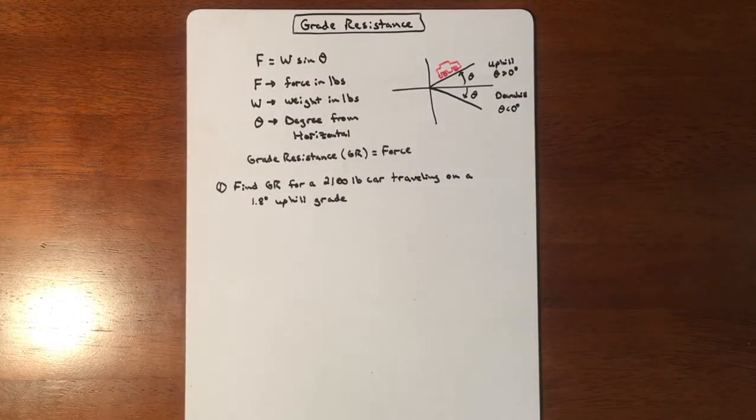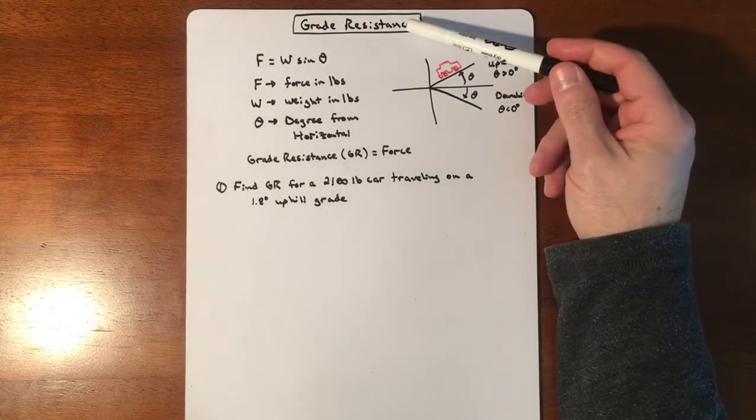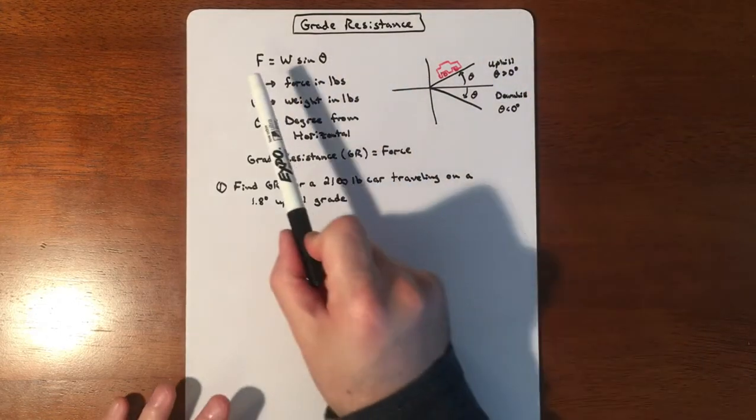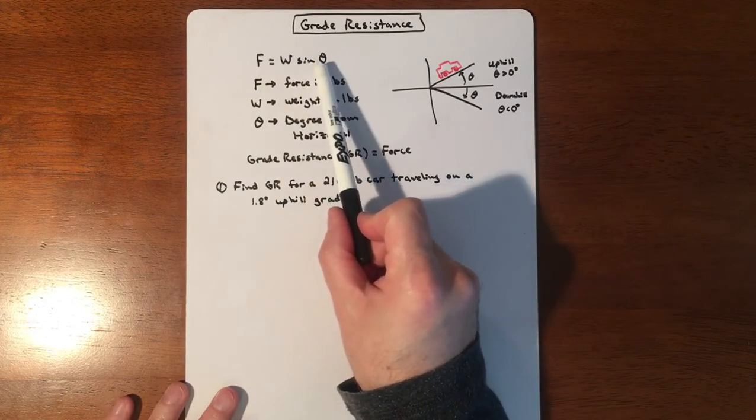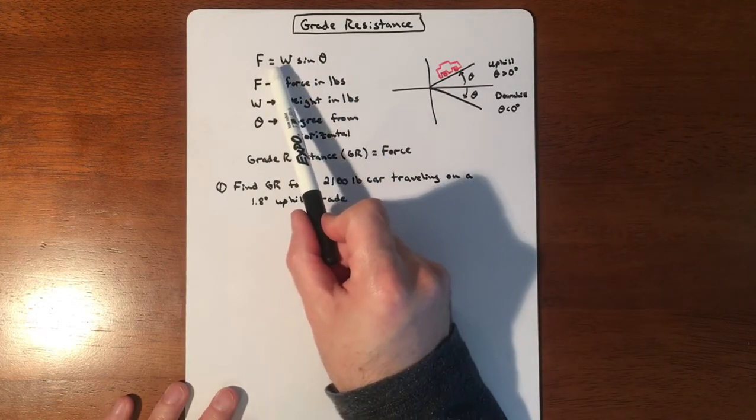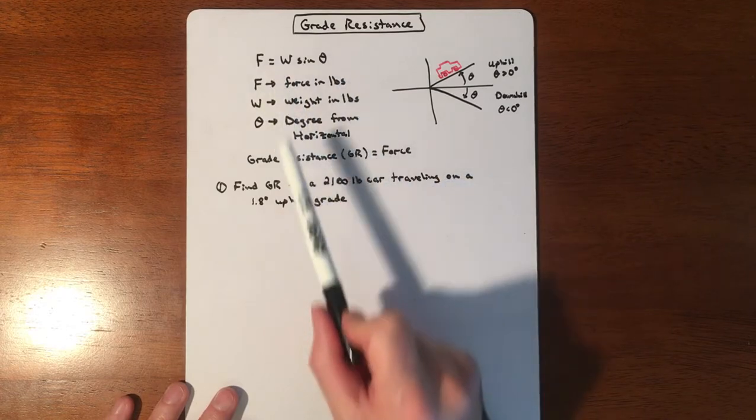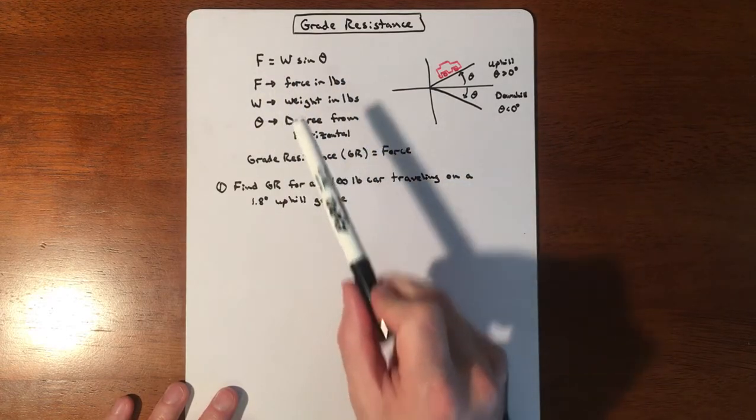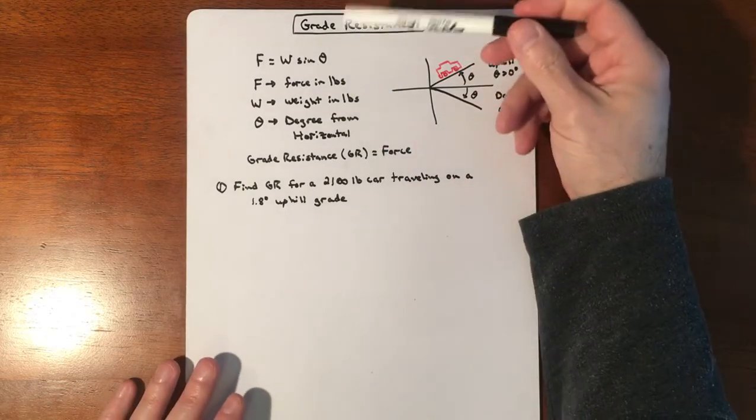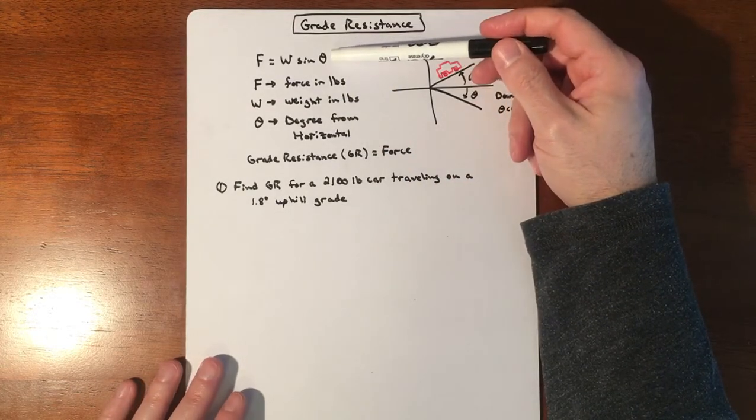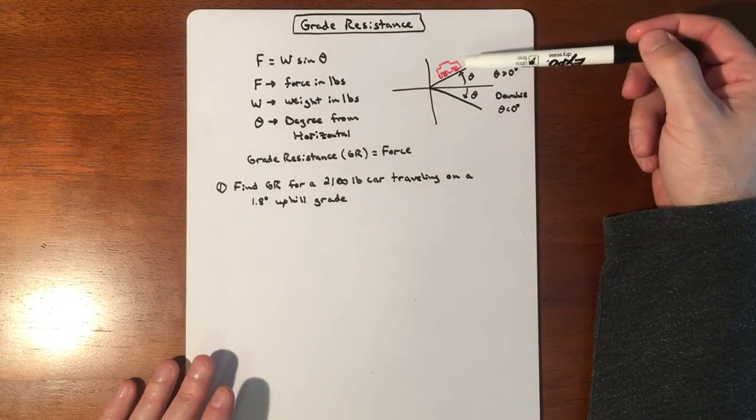In this lesson, we're going to do a little bit of physics, nothing crazy. It's talking about grade resistance. The good news is force equals your weight times sine of theta—that is the grade resistance. So force refers to your grade resistance. It's physics; there's just a resistance depending upon the angle.